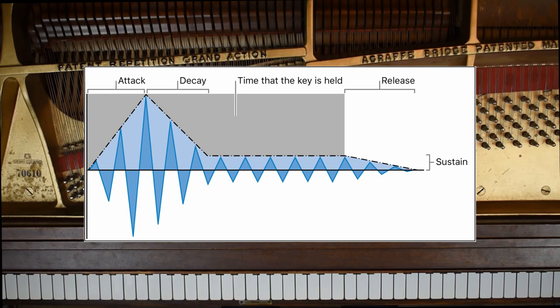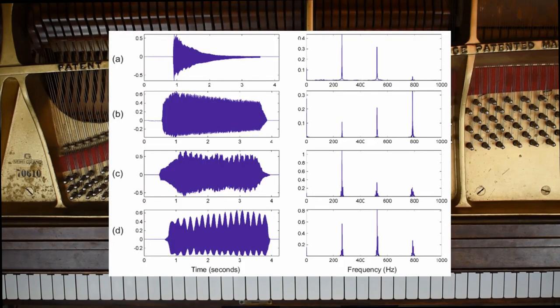The envelope tells us how the sound changes over time. We look at the attack, decay, sustain and release. Here examples of the piano, the trumpet, a violin and a flute.